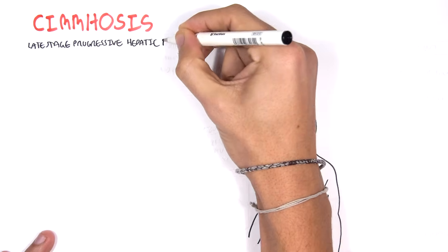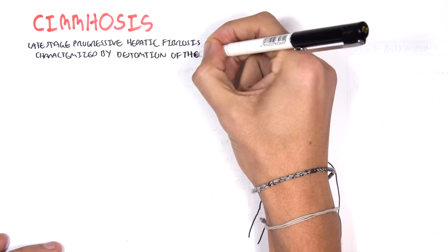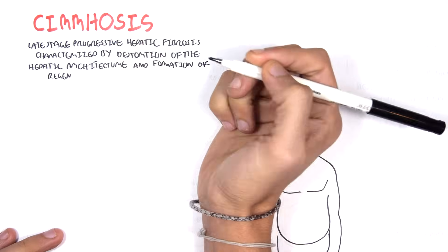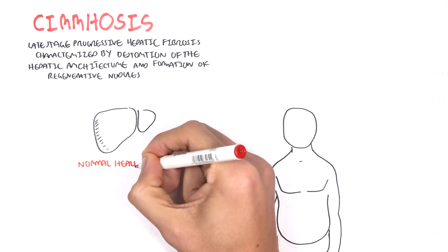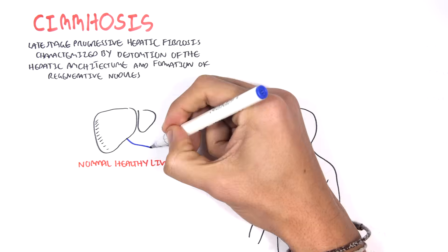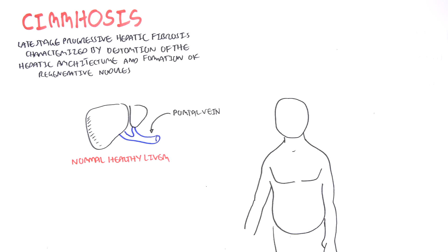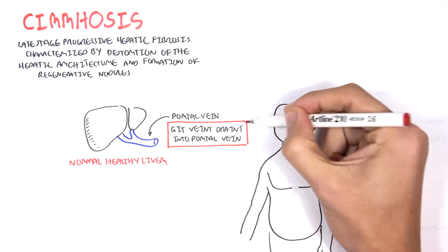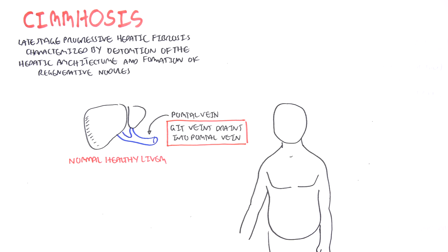Cirrhosis is a late-stage progressive hepatic fibrosis characterized by destruction of the hepatic architecture and formation of regenerative nodules. Here we have a normal, healthy liver, and draining into the liver is the portal vein. The portal vein is what the GIT veins essentially drain into. All those nutrients absorbed by the gut will pass through the liver through the portal vein.